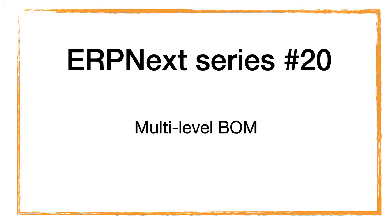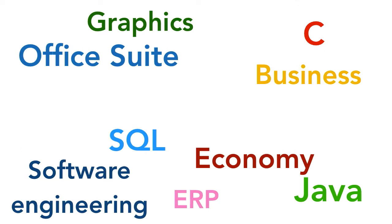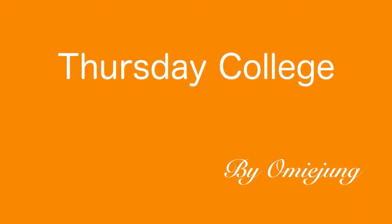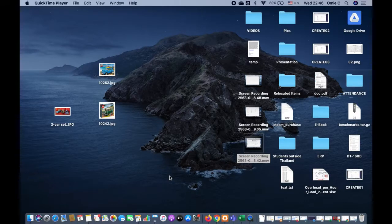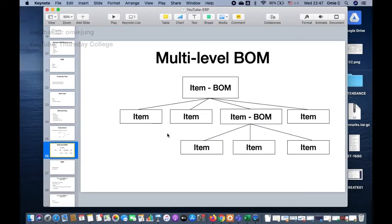Hello everyone, this is the ERP Next series number 20. The topic for today is the multi-level Bill of Materials. We're going to continue on the topic of the ERP Next series, specifically the multi-level BOM. We already covered the manufacturing process with work orders and production plans.